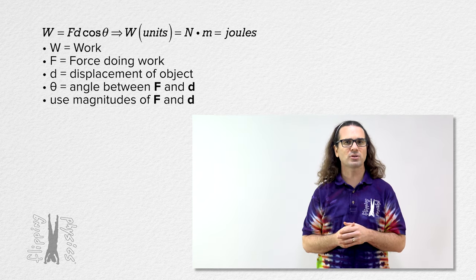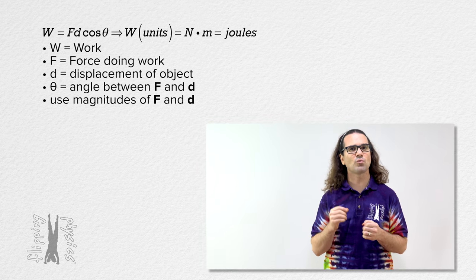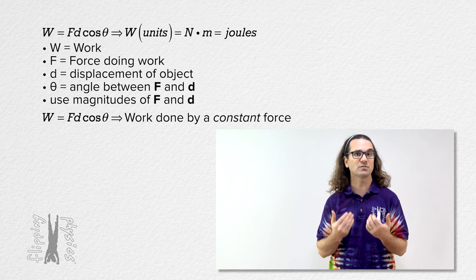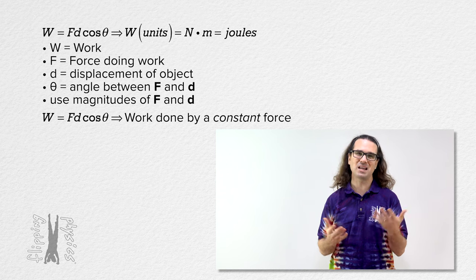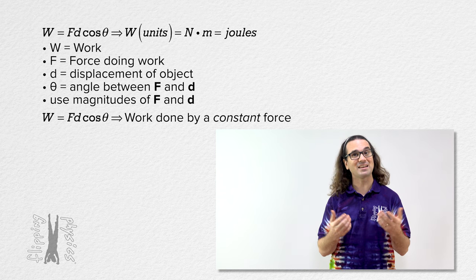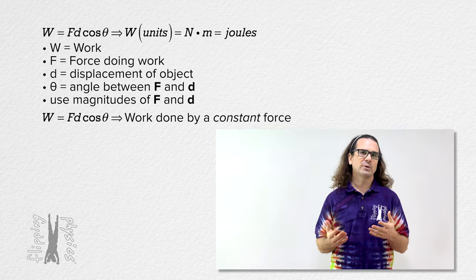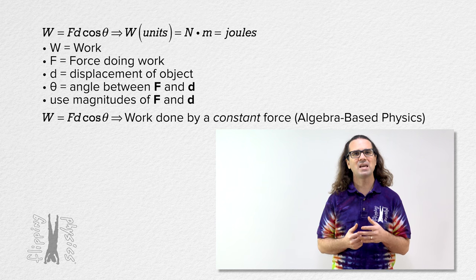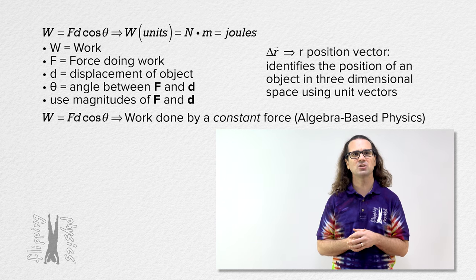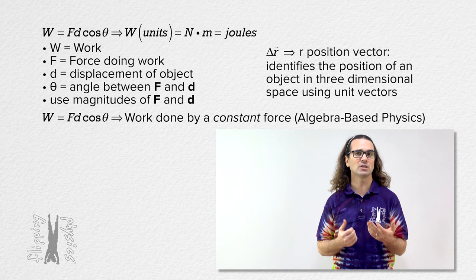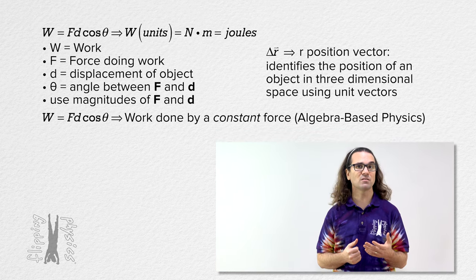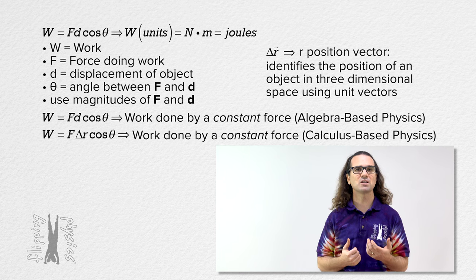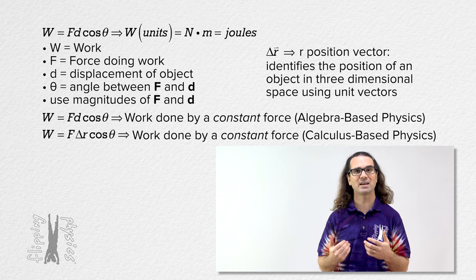Now, it is very important you realize this equation is for the work done by a constant force. We will discuss work done by a non-constant force at a later date, but not today. Now that we are doing calculus-based physics, we have the r position vector, which identifies the position of an object in three dimensions using unit vectors. Therefore, we can define the work done by a constant force as work equals force times change in r position of the object times the cosine of the angle between those two vectors.